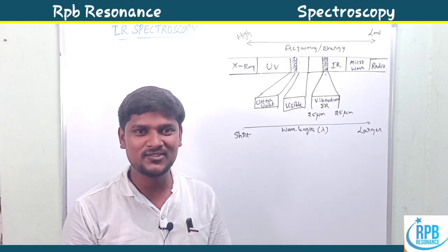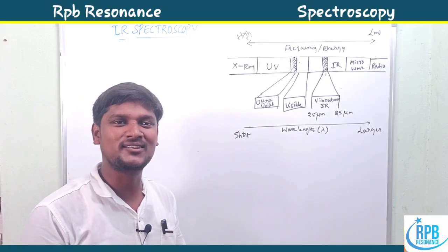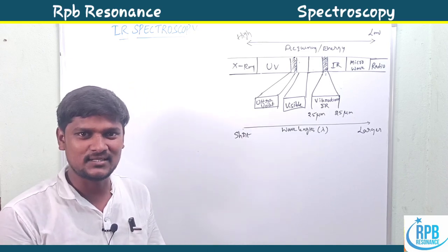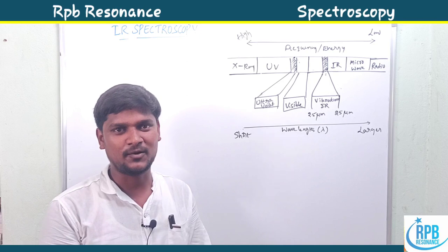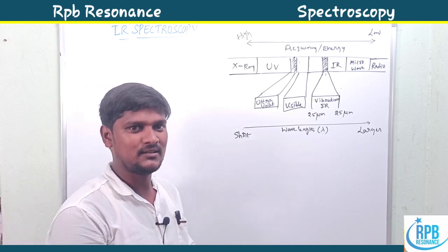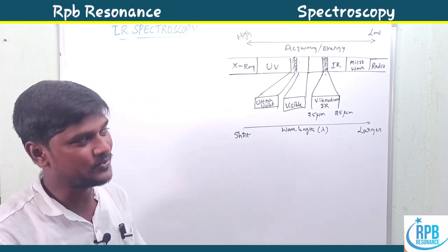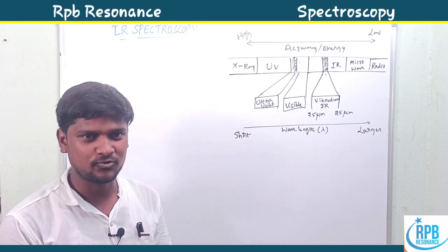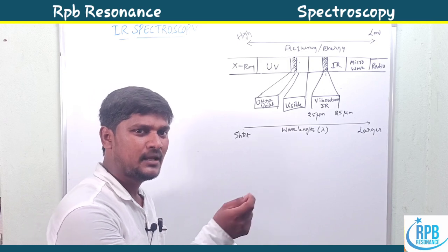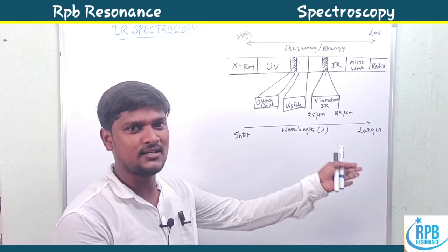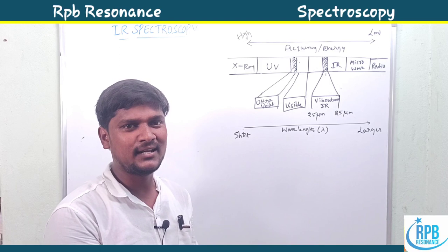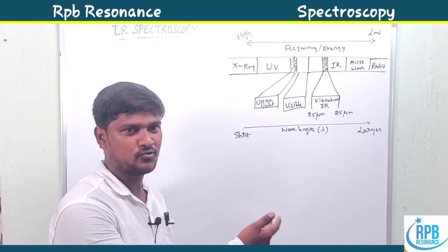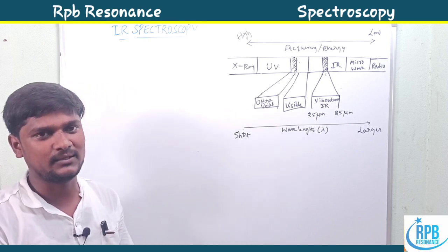Hi everyone, welcome to RPB Resonance Commission. I'm very excited to announce the new series of videos on spectroscopy. Today onwards I'll upload a series of videos on spectroscopy, and today I'm going to deal with the first spectroscopy, that is IR spectroscopy. We know that the basic definition of spectroscopy is a sample which is interacted with electromagnetic radiation and it gives a certain spectrum. Based on the electromagnetic radiation we can use different kinds of spectroscopies like IR spectroscopy, UV spectroscopy, NMR spectroscopy, and mass spectrometry.